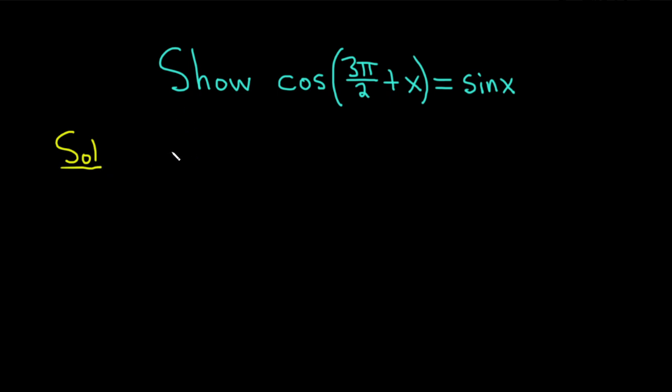So there's an identity that we're going to use. It tells us that if you have the cosine of A plus B, this is equal to the cosine of A times the cosine of B. Then you flip the sign, so minus sine of A, sine of B.